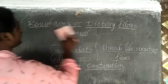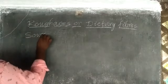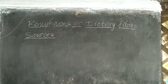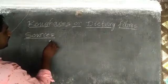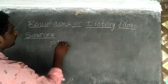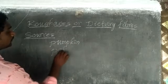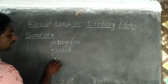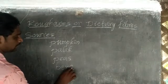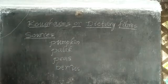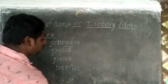What are the sources of roughages? Sources include pumpkins, palak, peas, berries, and gourds.